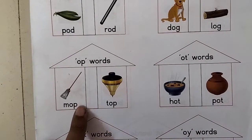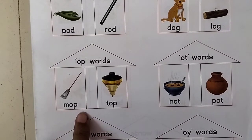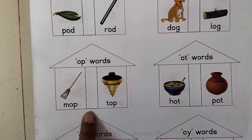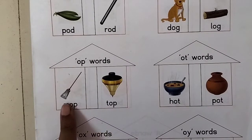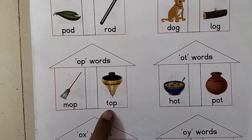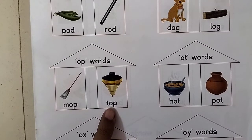चलो अब O, P words। M, O, P — Mop, यानी की पोछा। T, O, P — Top, यानी की जो हम खेलते हैं न — वो spinning top है।